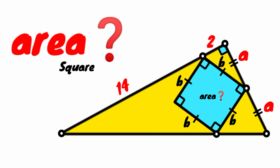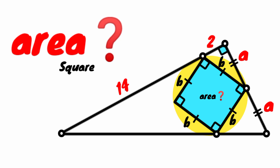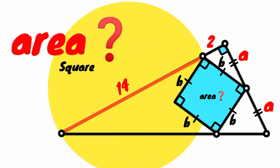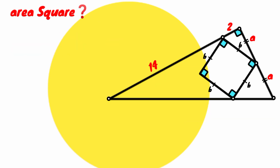Hi friends, welcome back to another interesting question. We are to calculate the area of the square shown here. The length of its sides are assumed to be B each, and its angles are right angles. The length of this line segment is A, and this is also A. That of this is 2 units, while this is 14 units. So how can we calculate the area of this square?